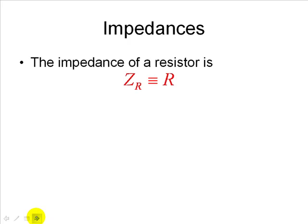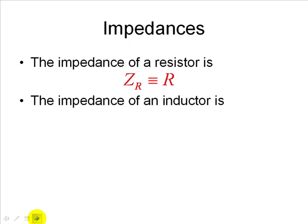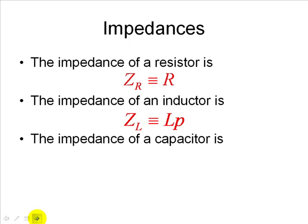For a resistor, the impedance is just R, its resistance. For an inductor, the impedance is LP. For a capacitor, the impedance is 1 over CP, where P is the P operator introduced by physicist Oliver Heaviside.